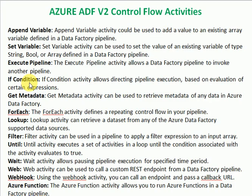If Condition is used when you want to validate source data — like validating source file arrivals or conditions through variables, or based on timing. You can write conditions using expressions in your if condition. Based on that condition, if it is true you can execute one set of activities; if it is false you can execute other activities or call pipelines.